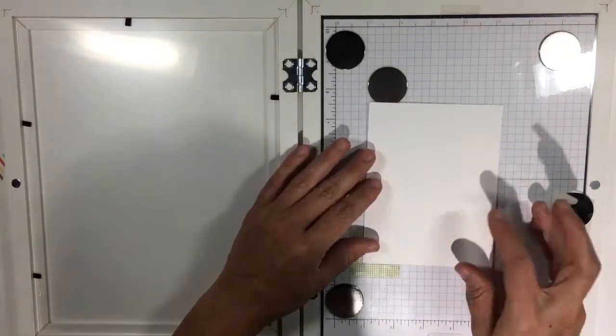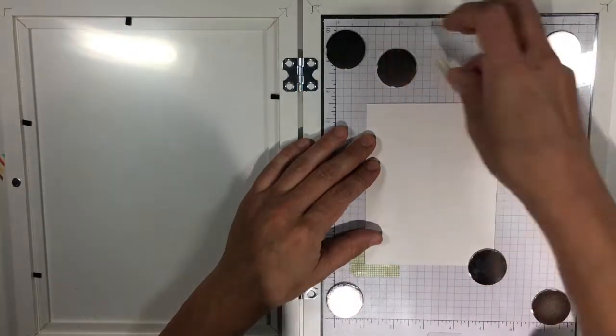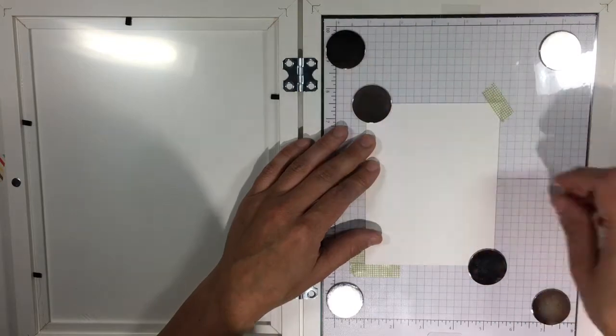The next thing I did was to add some magnets and a little angle using some washi tape just so that I could make sure that I was positioning my piece of paper in the same place every single time.